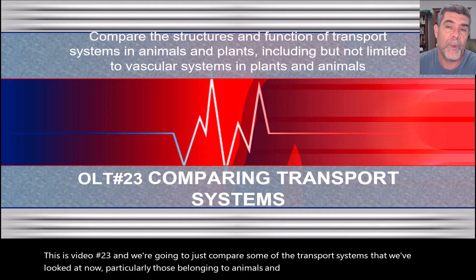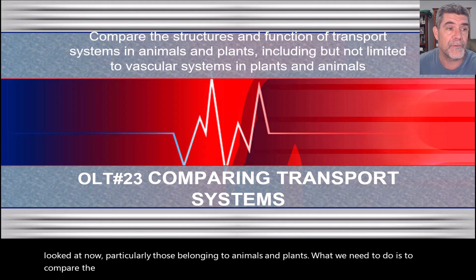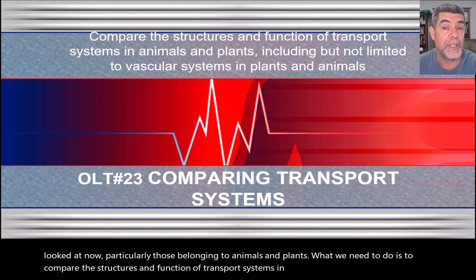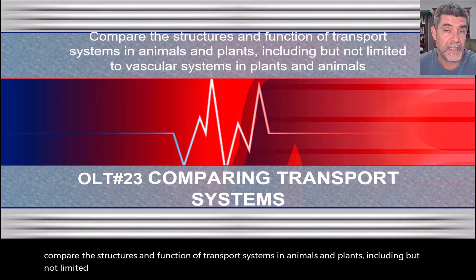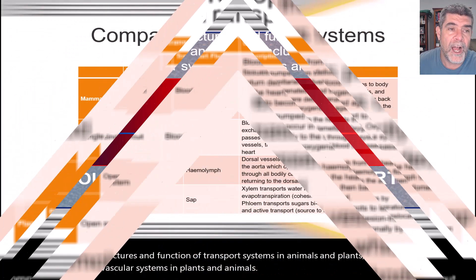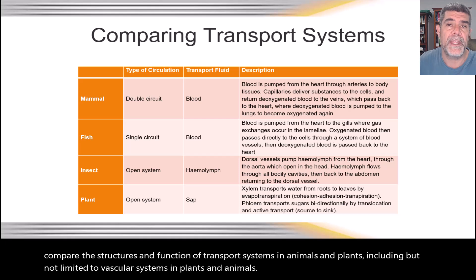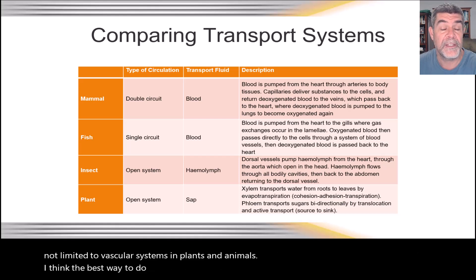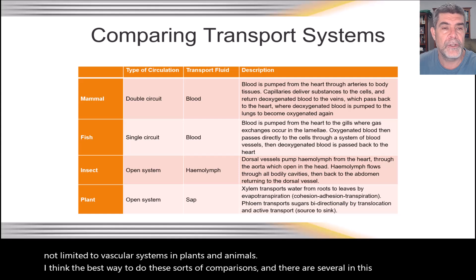What we need to do is compare the structures and function of transport systems in animals and plants, including, but not limited to, vascular systems in plants and animals. The best way to do these sorts of comparisons — and there are several in this module — is to set up a table.